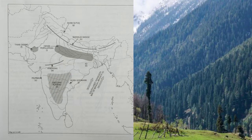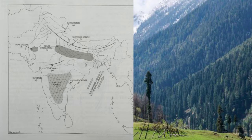Mark with a bold line and name the Vindhya Mountains. Mark and name the Thar Desert in this area. Trace the course of river Sutlej and name it. Mark with a bold line and name the Shivalik Range. Mark an area of dense population north of the Tropic of Cancer.